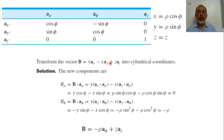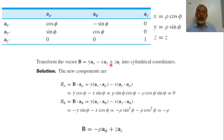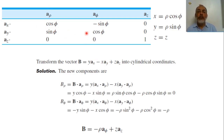As an example, assume it is required to transform the vector B = y·a_x − x·a_y + z·a_z into cylindrical coordinates. The x component (coefficient) is y, the y component is −x, and the z component is z. We substitute y = rho·sin(phi), x = rho·cos(phi), and z = z, and use the conversion: a_x gives cos(phi) in rho and −sin(phi) in phi; a_y gives sin(phi) in rho and cos(phi) in phi.